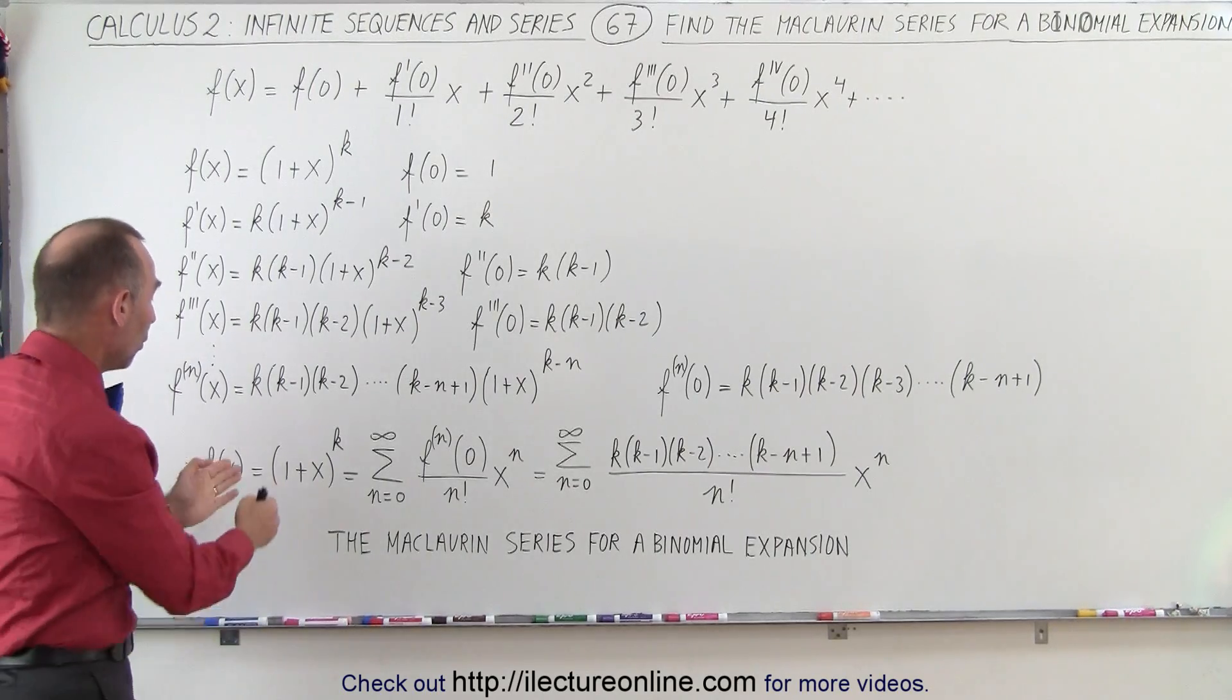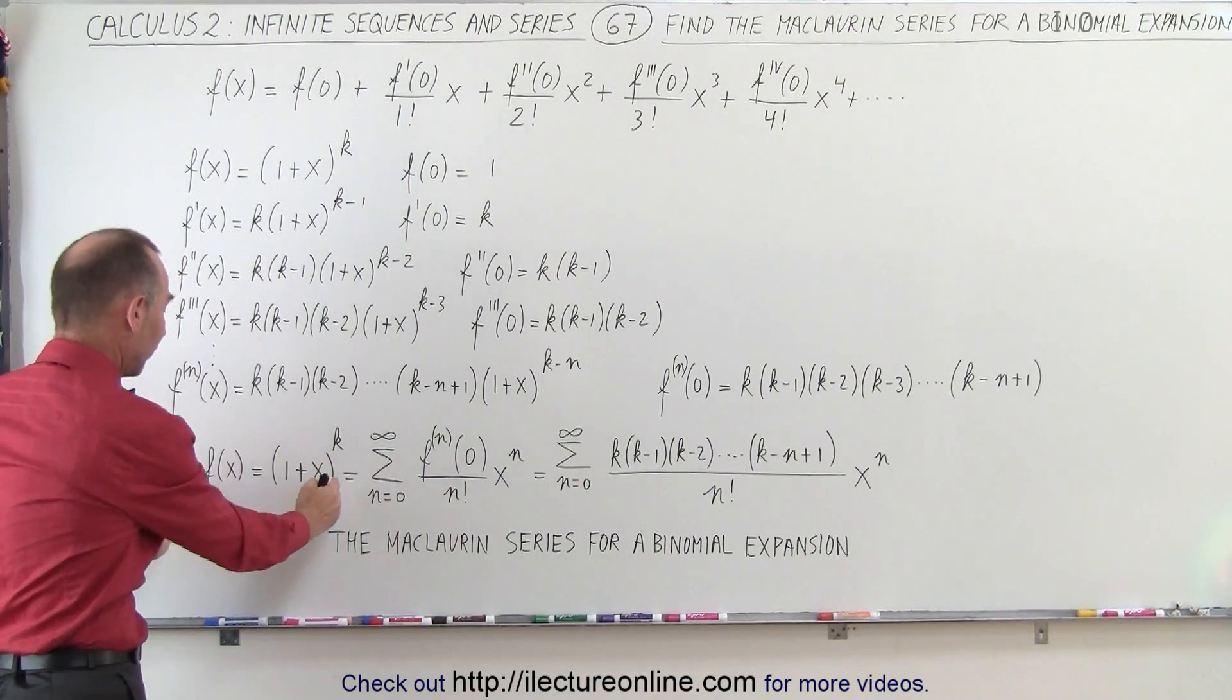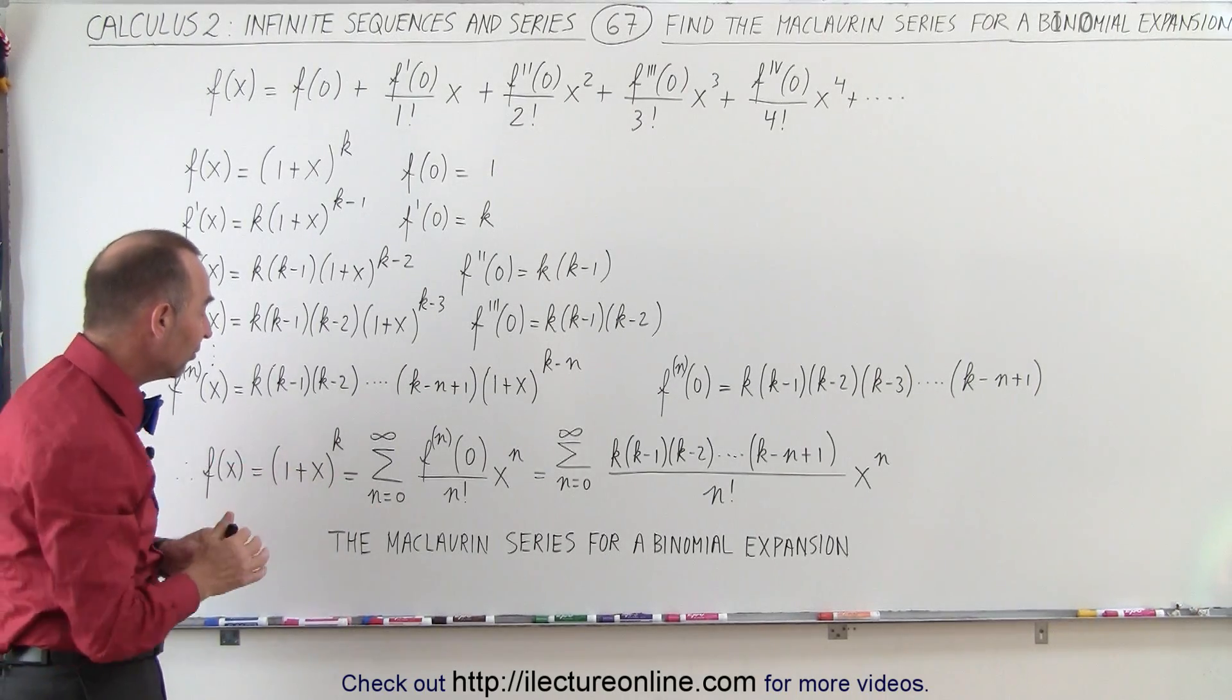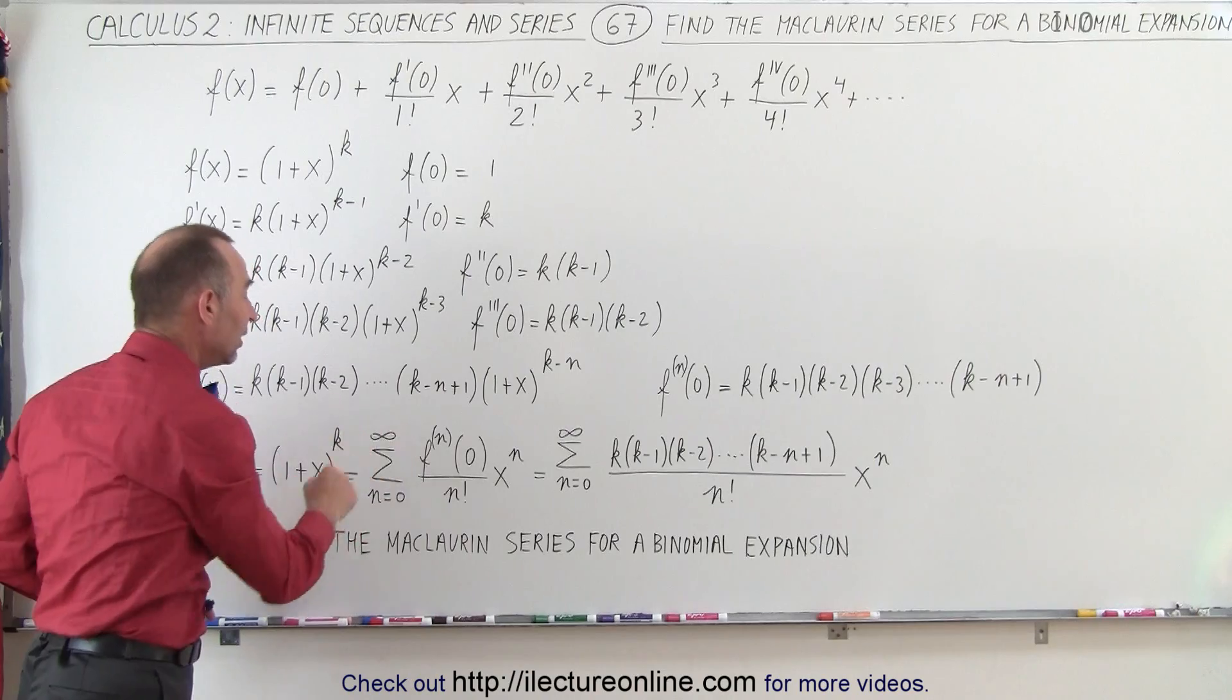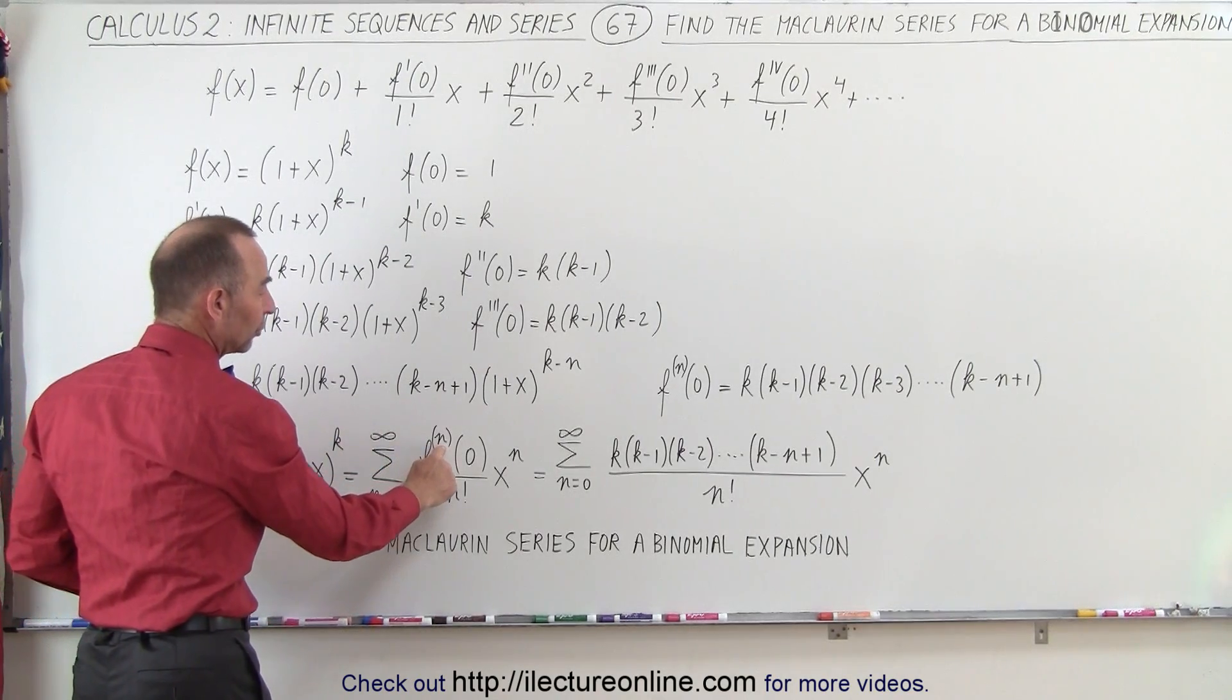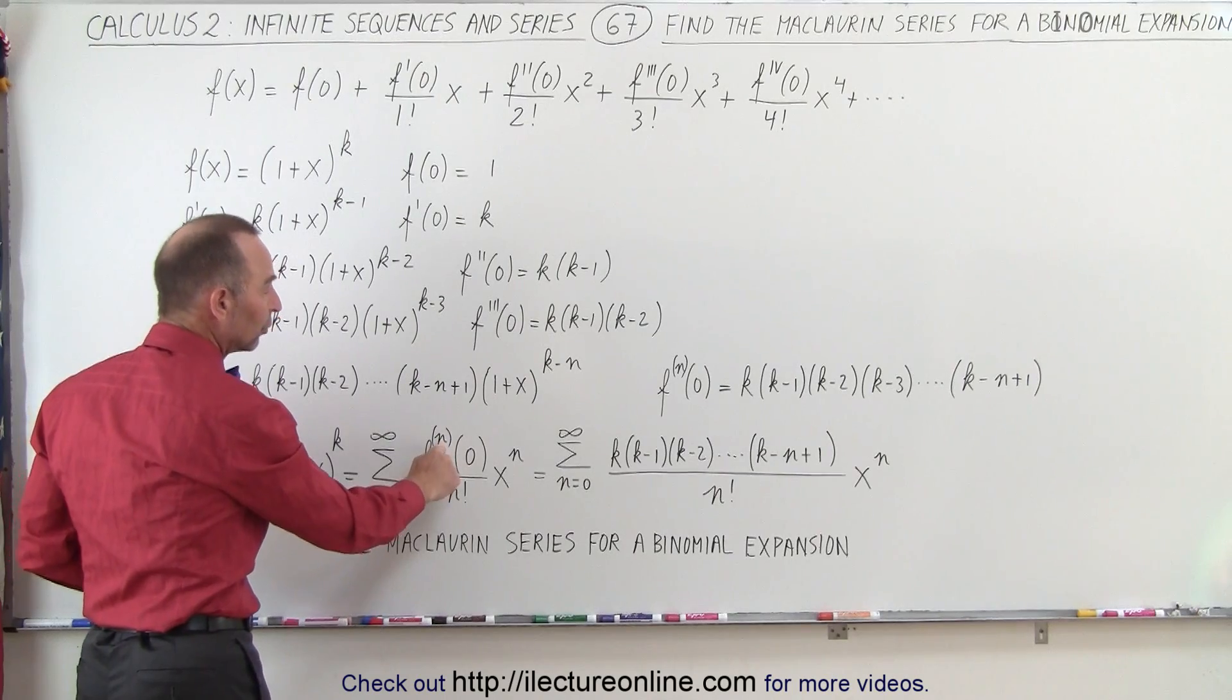f of x is equal to 1 plus x to the k power, that's the function we start with, but that can now be written as the infinite series from n equals 0 to infinity. Of course, we have the nth root, well, we start with the 0 root, the first root, the second root, the third root, and so forth.